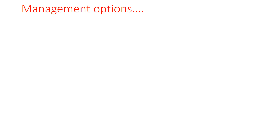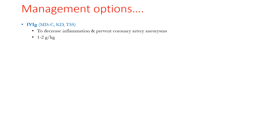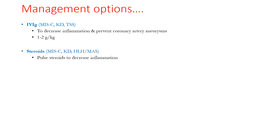Management options common across these entities include: IVIG — used in MIS-C, KD, and TSS to decrease inflammation and prevent coronary artery aneurysms, at a dose of 1–2 grams per kg over 1–2 days. Steroids are used in MIS-C, KD, and HLH/MAS, with pulse steroids to decrease inflammation. They are typically not used in toxic shock syndrome, which shows a dramatic response to antibiotics.